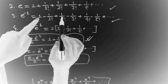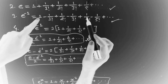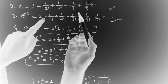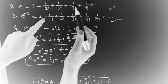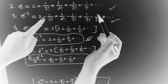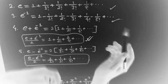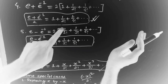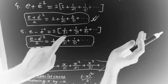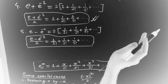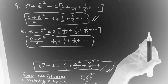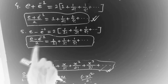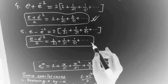The negative terms cancel out; only positive terms remain. Subtracting and dividing by 2 gives: (e minus e to the power minus 1) divided by 2 equals 2 times the bracket 1 divided by 1 factorial plus 1 divided by 3 factorial plus 1 divided by 5 factorial plus 1 divided by 7 factorial, and so on — containing only odd factorial terms.